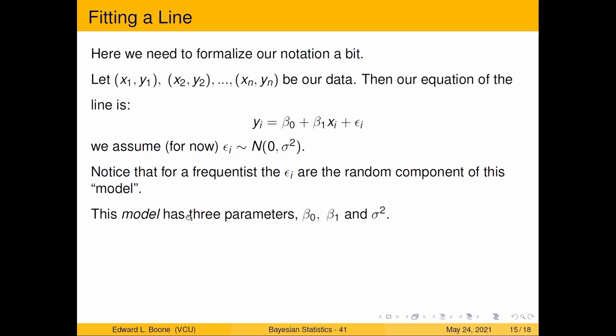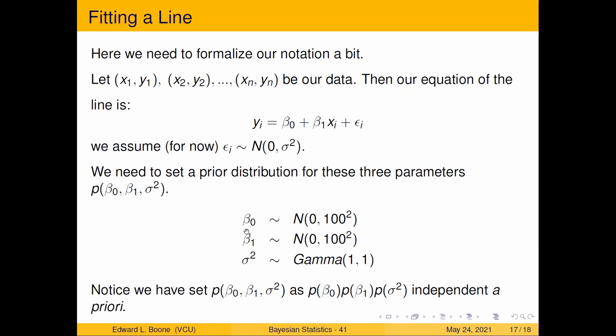But we actually have three parameters from a Bayesian perspective. We have three parameters anyway, but all parameters are random here. So we need to set a prior distribution for these three parameters, beta zero, beta one, and sigma squared. It needs to be a joint distribution, which is difficult to set up. So we're not going to set that up directly. What we're going to do is we're going to treat them as if a priori, they're independent from each other.